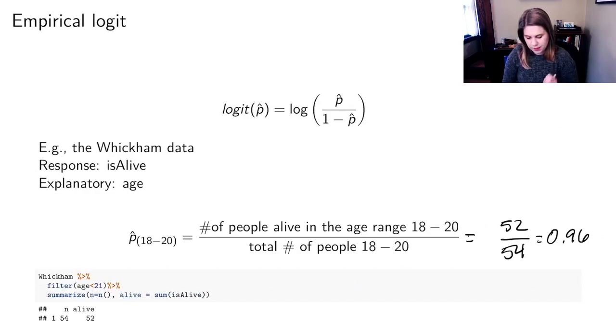And then this relates to something called the empirical logit. Logit, remember, is the log of the odds, and the empirical part means that it is from observed data, it's kind of real.